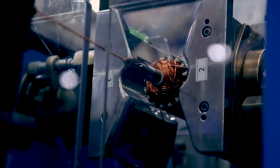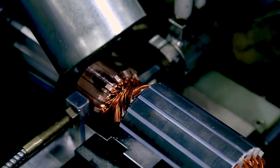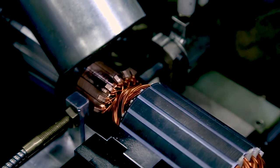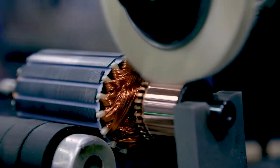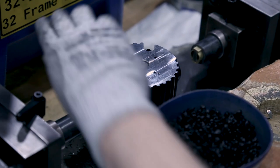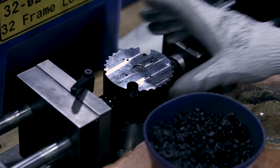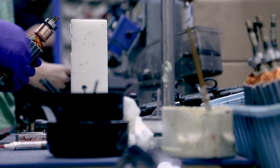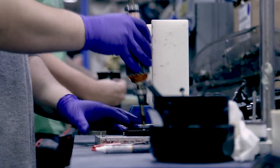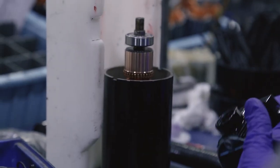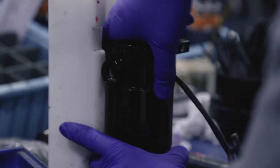We make the yoke and magnet assemblies, we machine the end bells. We assemble it all, magnetize it, and then we've got a finished DC motor that goes over to the assembly department.